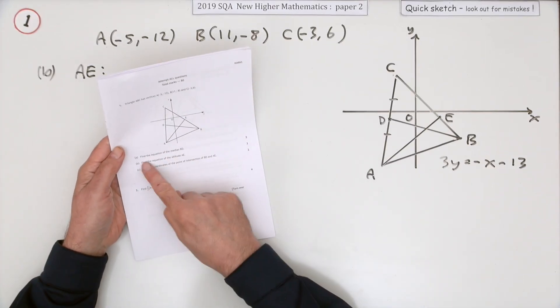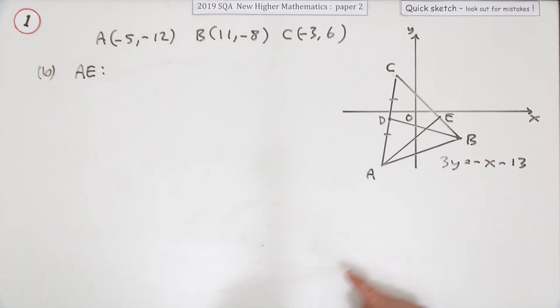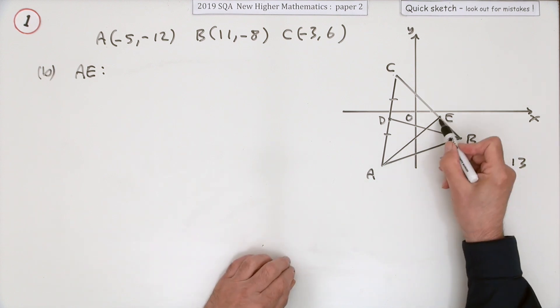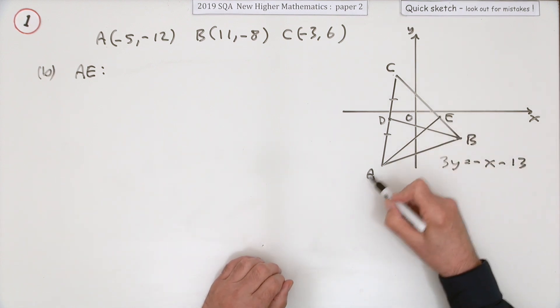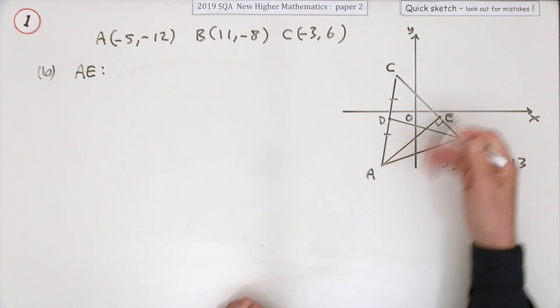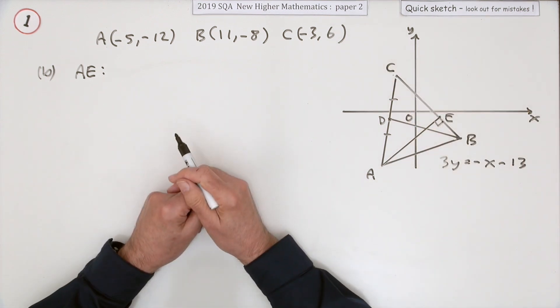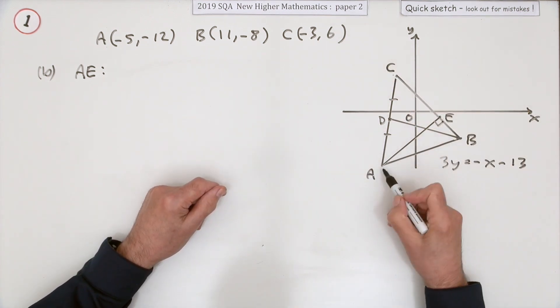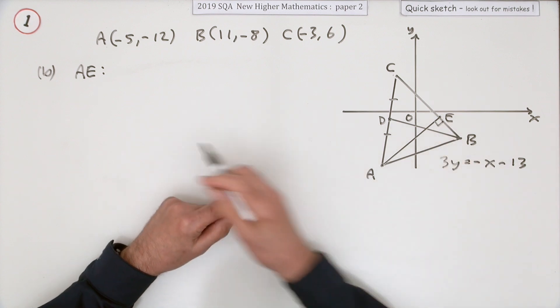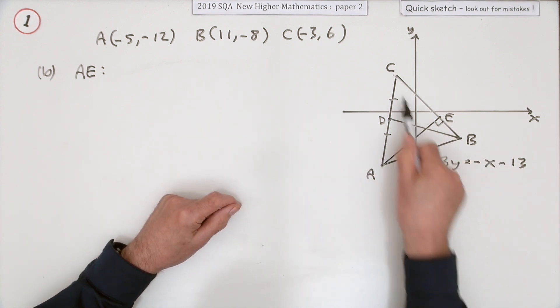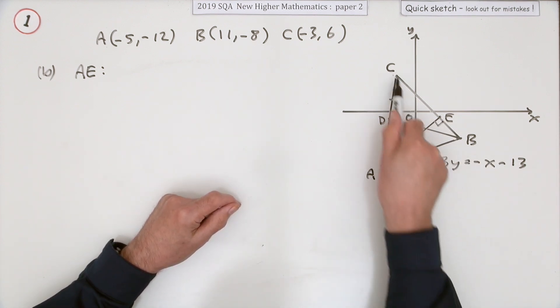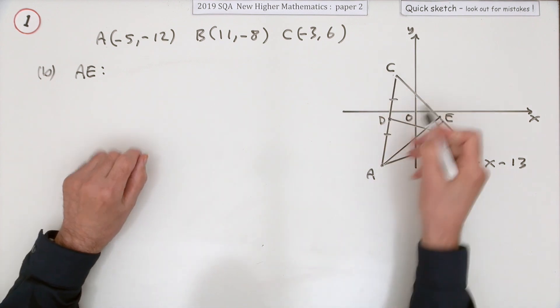Next part, find the equation of the altitude this time AE. If AE is an altitude it doesn't go to the midpoint, it's an altitude, it's at right angles to it. That would be like the height if BC was on the ground. That means you only know this point A, there's no point trying to figure out E.